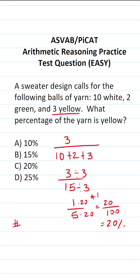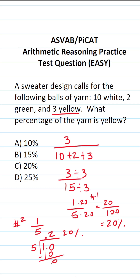Another way to solve this is to read the fraction as long division: 1 divided by 5. Since 5 does not go into 1, we add a decimal and a 0 placeholder, bringing the decimal on top of the division bracket. 5 times 2 is exactly 10 with no remainder, giving us 0.2, which is the same as 20%. So regardless of how you solve this, the answer is 20%, answer choice C.